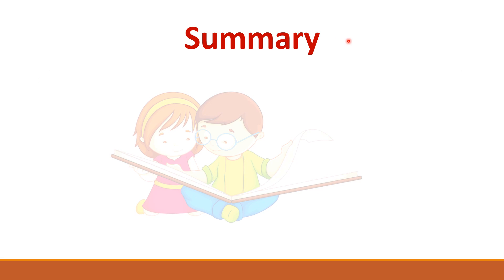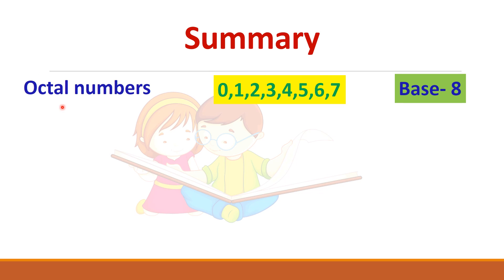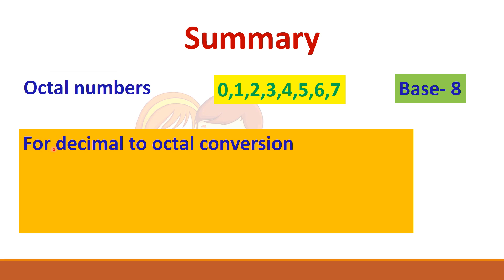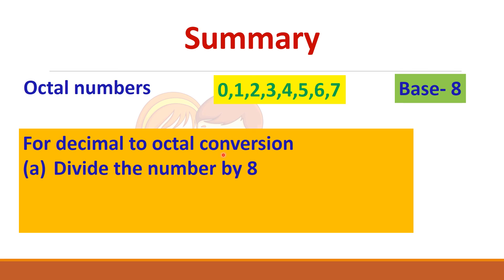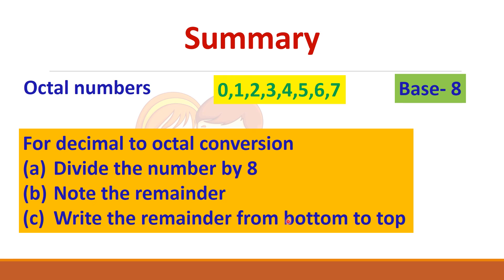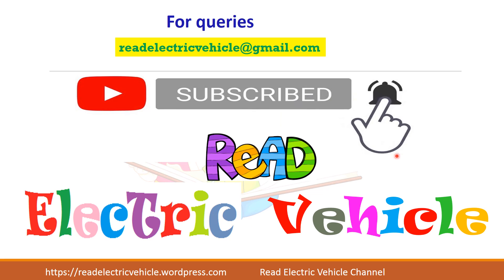To summarize: octal numbers are 0 to 7 and the base of octal is 8. For decimal-to-octal conversion, go for repeated division — divide the number by 8, note the remainder, and write the remainders from bottom to top for the integer part. If you liked the video, please subscribe to the channel. Thank you.